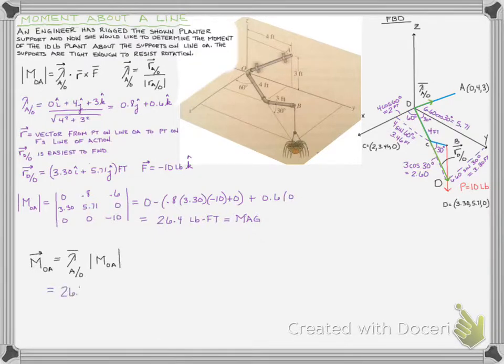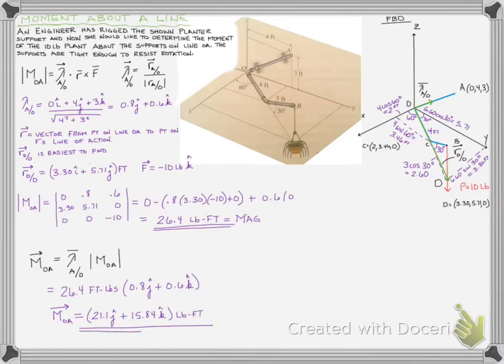And if we do that, we would just get our 26.4 pound feet. We multiply that out by our 0.8J plus 0.6K, and we're going to find out that in vector coordinates, or Cartesian coordinates, that the moment about OA, not the magnitude, but the vector component moment, is 21.1 in the Y direction, and 15.84 pound feet in the Z direction. And that is how you find the moment about a line using vector notation.